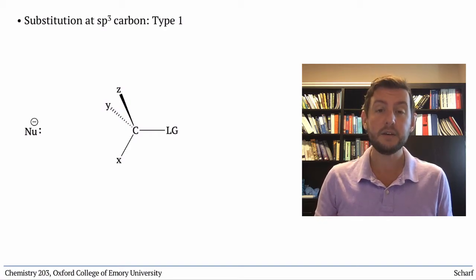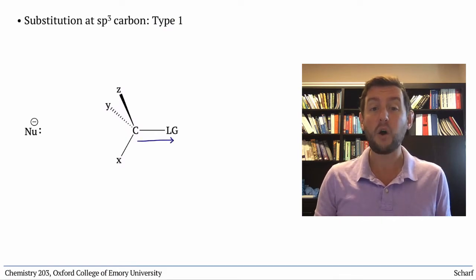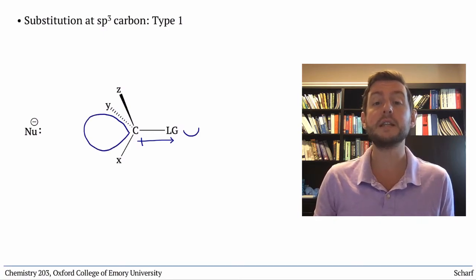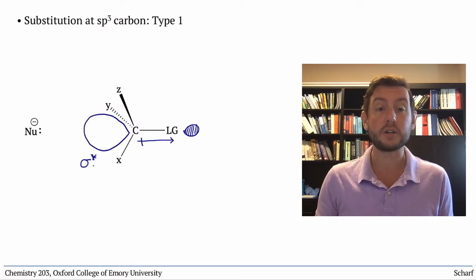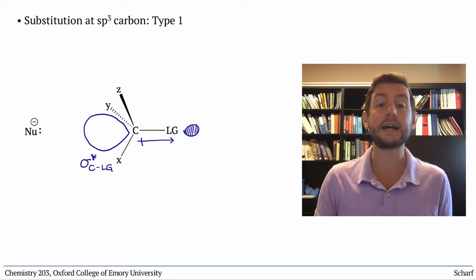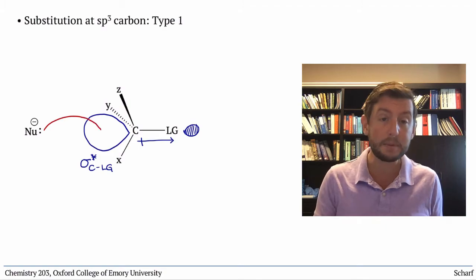Since leaving groups, by definition, stabilize negative charge reasonably well, they're always more electronegative than carbon. So sigma star C leaving group is always larger on carbon. Therefore, the nucleophile attacks from the side of the molecule opposite the leaving group.